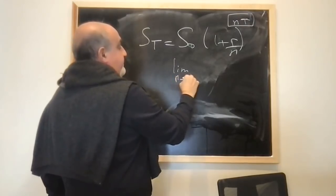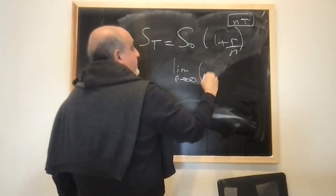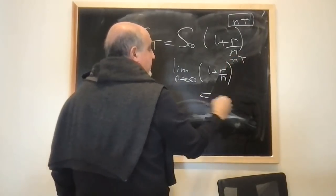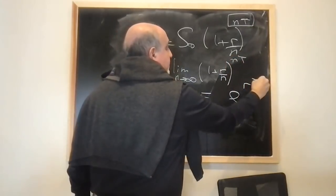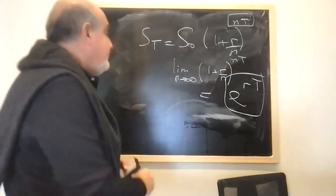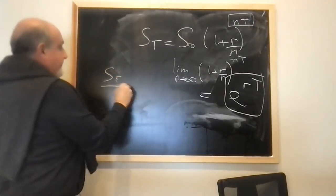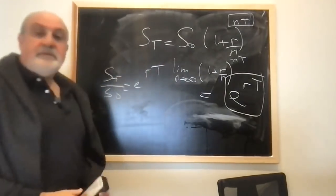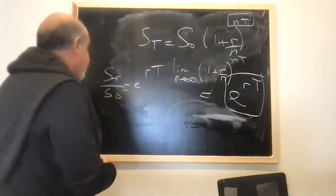Limit as n goes to infinity. And (1 + r/n)^(nt) equals e^(rt) exponential. So here I'm going to have St over S0 equal e^(rt), the return of the number of periods.